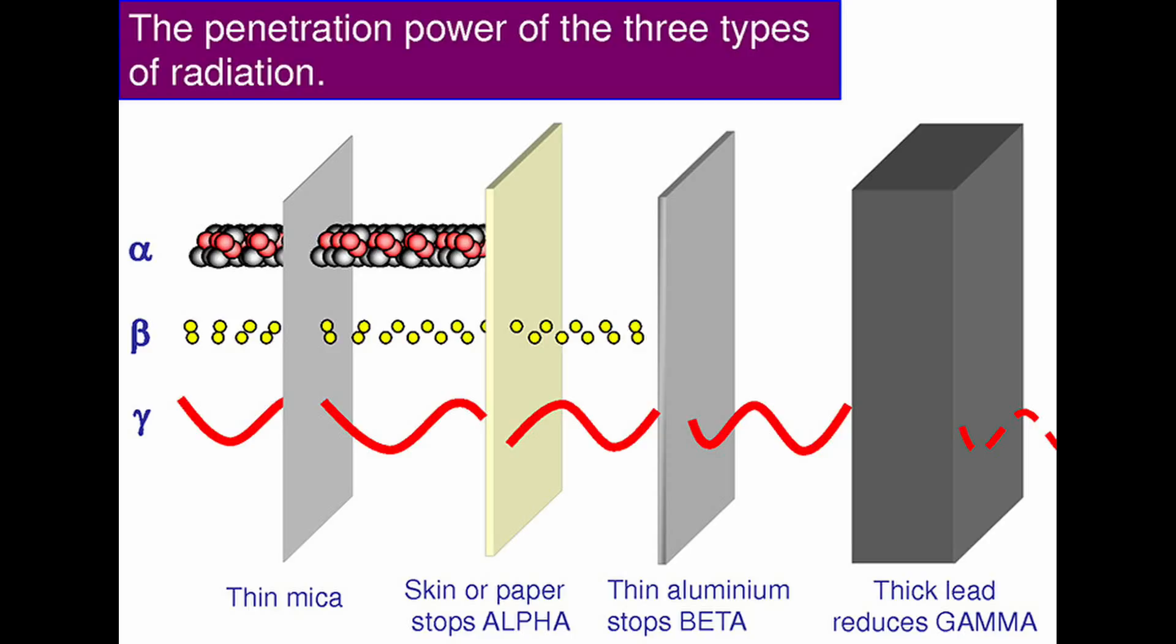Alpha particles are the weakest of the three types, as they can be stopped by a single sheet of paper, or even your skin. However, alpha particles can pass through very thin materials, like mica.